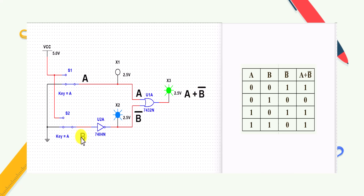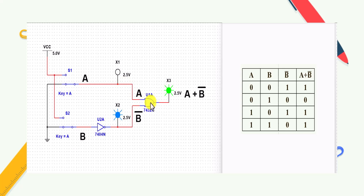B is first converted using a NOT gate. So the NOT gate output gives B̄. The OR gate takes input A directly. The OR gate inputs are A and B̄, and the output is A + B̄.